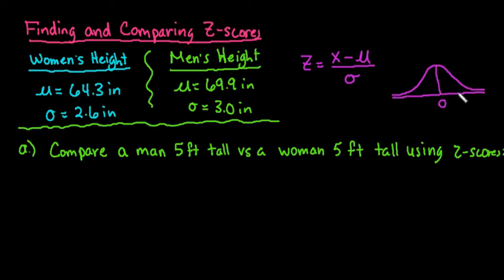Our standard normal model is going to be centered at zero. The standard normal model, the z-score of zero means that the actual value is equal to the mean. So if the actual value is equal to the mean, then I would have a z-score of zero. And then if I have a positive standard deviation, then it's going to be to the right. And a negative standard deviation is going to be to the left.